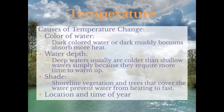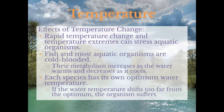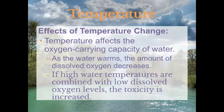Causes of temperature change include the color of the water — dark colored water or dark muddy bottoms absorb more heat, causing abnormally high temperatures. Water depth is another factor; deep waters are usually colder than shallow water because they require more time to warm up. Vegetation and trees along the shoreline shade and cover water, preventing it from heating up. Location and time of year also determine water temperature. Temperature affects the oxygen-carrying capacity of water — as water warms, dissolved oxygen decreases, and if high temperatures combine with low dissolved oxygen, toxicity increases.